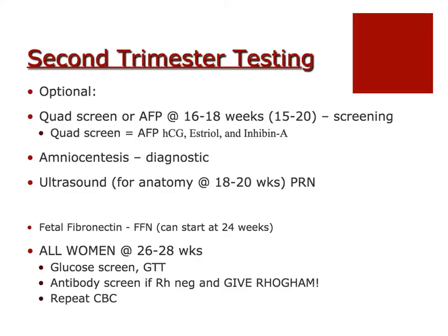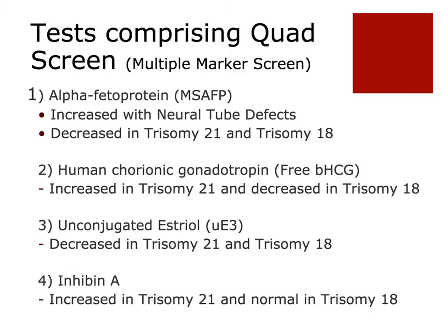In the second trimester, I want you to look at the quad screen and amniocentesis. The quad screen is our screening test and the amniocentesis is our diagnostic test. The quad screen, which makes sense, is comprised of four things tested in mom's blood: AFP (alpha-fetoprotein), human chorionic gonadotropin, estriol, and inhibin A. Those four things all comprise the quad screen. Go ahead and look through what it means if various levels of these are high or low.